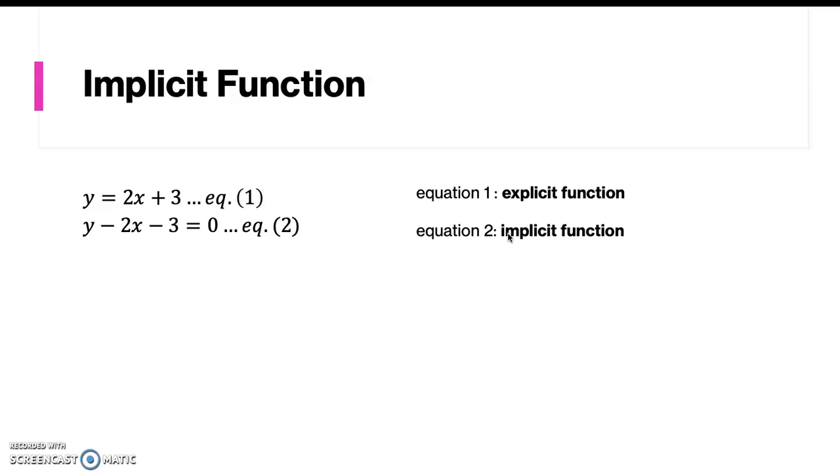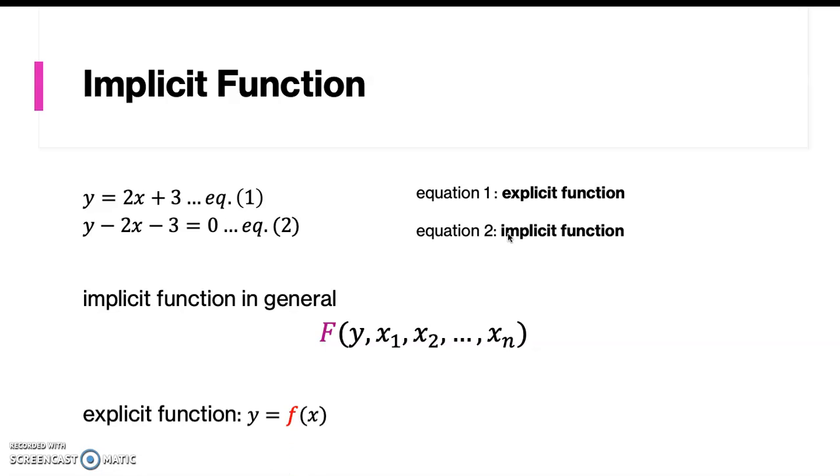Or if we have multiple variables, then an implicit function can be written in general as follows. Here we write capital F instead of a small letter f, which is used when writing a general form of an implicit function.